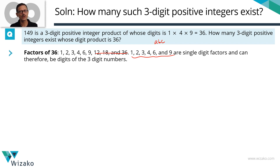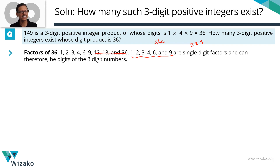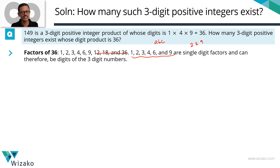A, B, and C can each be any one of these six values. Note that more than one digit could be the same — for example, 229 is a valid number where the product of digits equals 36. So A, B, and C need not be distinct. We are going to evaluate six use cases based on which of these six digit values appears.